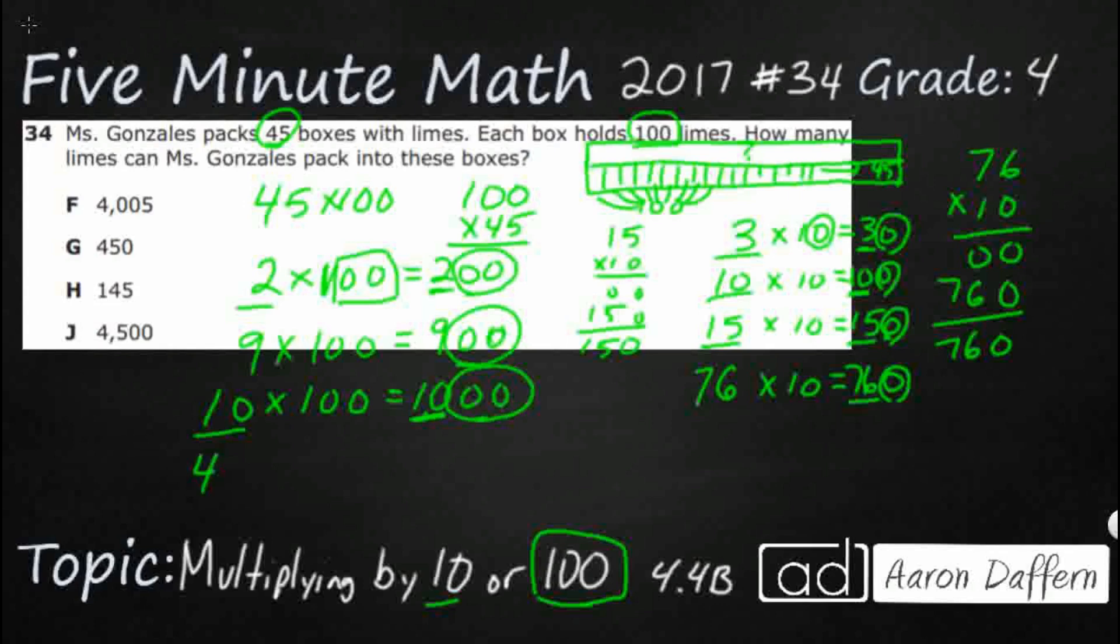So if we want to do 45 times 100, guess what we do? So we do 45 with 2 extra zeros. And finding this pattern is really helpful. And so our answer here is going to be J, 4,500.